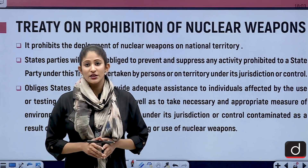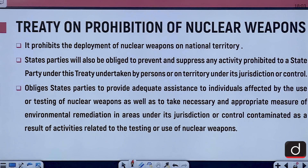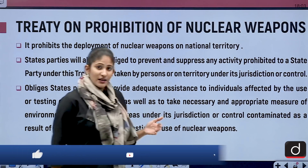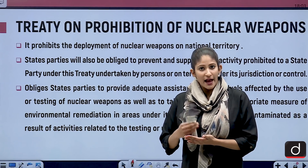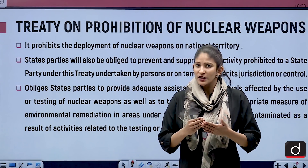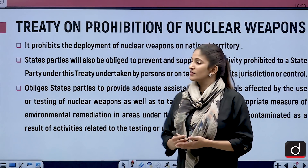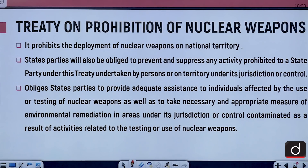Looking at the salient features of the treaty: it prohibits the deployment of nuclear weapons on national territory and helps states that want to prohibit the possession, acquisition, deployment, threat to use, actual use, or stockpiling of nuclear weapons. State parties are also obliged to provide adequate assistance to individuals affected by the use or testing of nuclear weapons, as well as to take necessary measures of environmental remediation in areas contaminated as a result of activities related to testing or use of nuclear weapons.